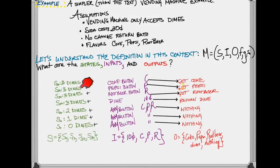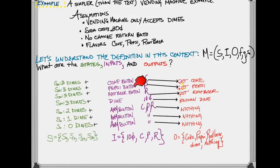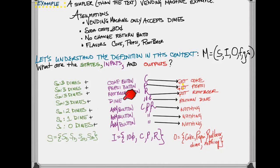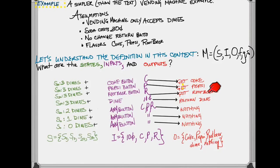When you have three dimes in the machine and you press the Coke button, your output should be to receive a Coke. When you press the Pepsi button with three dimes in the machine, you receive a Pepsi. When you press the root beer button, you should receive a root beer. However, when you have three dimes in the machine and you insert another dime, you shouldn't be penalized for putting too much money in the machine. We'll assume the machine returns that dime to you directly.